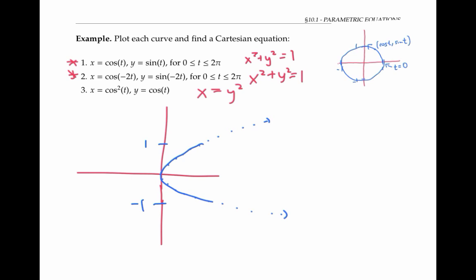As t varies from say, zero to pi, I traverse this parabola one time. And then as t goes from pi to two pi, I go back again in the other direction. And as t continues to increase, I traverse this parabola infinitely many times. The Cartesian equation for this curve is the equation x equals y squared, with the restriction that y is between negative one and one.